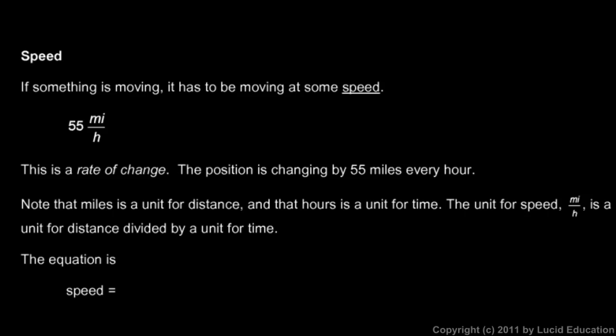Now we'll talk about speed. If something is moving, it has to be moving at some speed. For example, your car might be moving at 55 miles per hour. Speed is a rate of change, and specifically it's the position that is changing — by 55 miles every hour. That's what that speed means: 55 miles per hour. The position changes that much in that much time.